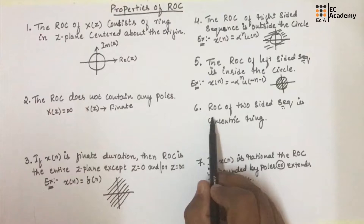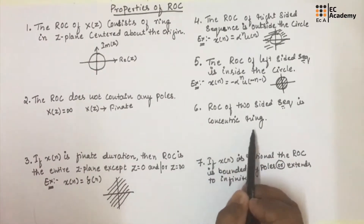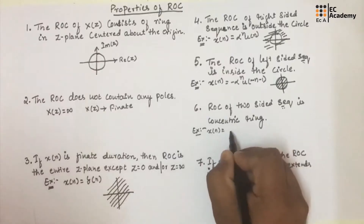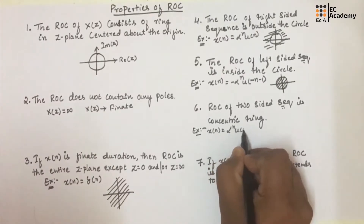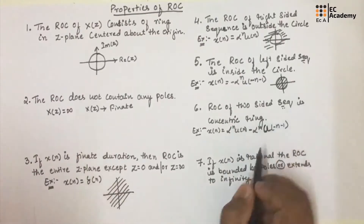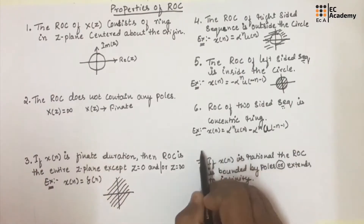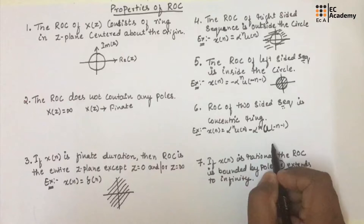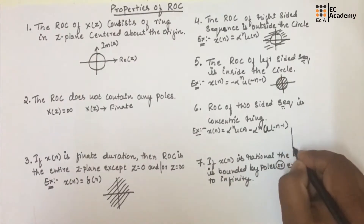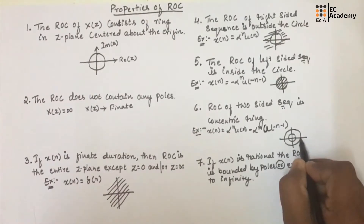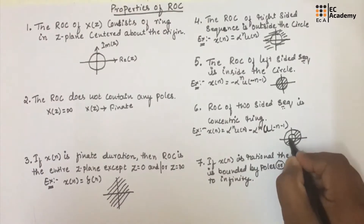The next property is the ROC of a two-sided sequence is a concentric ring. For example, X(n) equal to alpha to the power of n times U(n) minus U(minus n minus 1) consists of both a right-sided and a left-sided sequence, which is why we call it a two-sided sequence. We get two circles in the Z-plane and the ROC is greater than the inner circle and lesser than the outer circle.